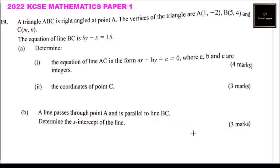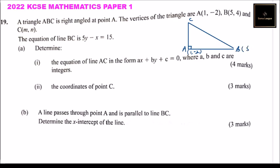Let's make a sketch of the triangle. It is right-angled at A. So this is A, this is B, and that is C. We are told the coordinates of A are (1, -2), B is (5, 4), and C is (M, N). We have been given the equation of line BC: it is 5Y minus X equals 15. With that, you can see all the information provided in a better way.